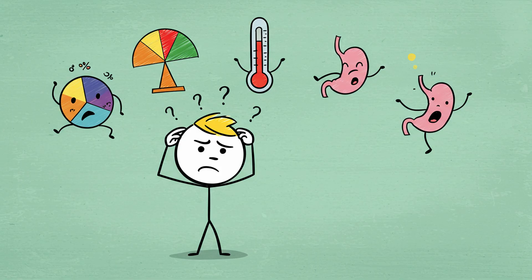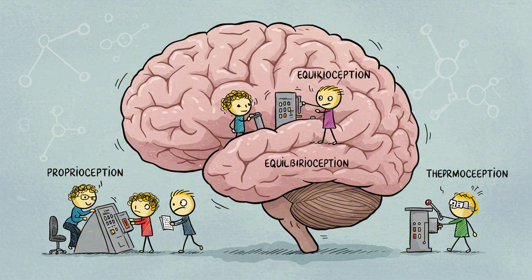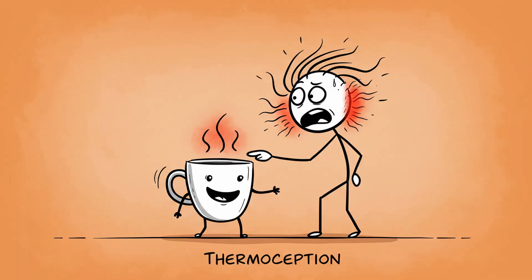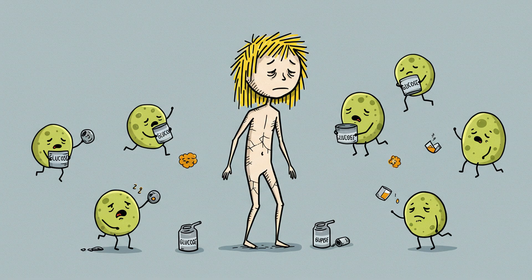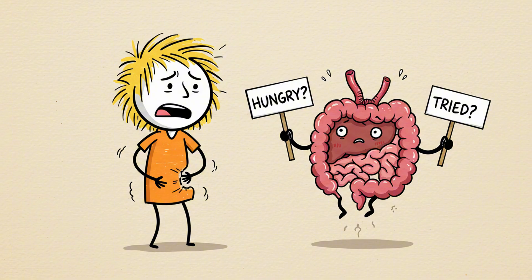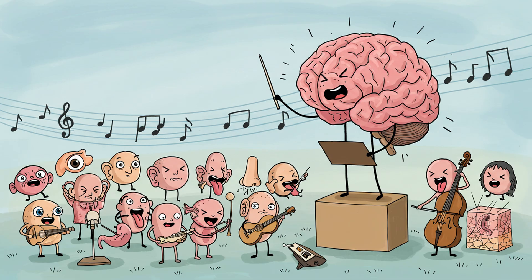You have over 20 sensory systems working quietly every second. There's proprioception, the sense of where your body is in space. Equilibrioception, your sense of balance. Thermoception, for temperature. Nociception, for pain. Interoception, which tells you when you're hungry, anxious, or need rest. Your brain is a symphony of sensors keeping you alive without applause.